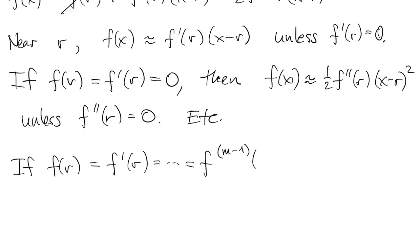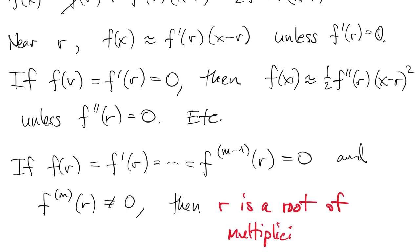If the first m derivatives, including the zeroth, are zero at the root, but the mth derivative of f is not zero, then we call r a root of multiplicity m.